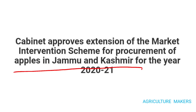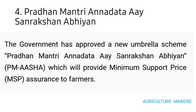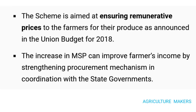Now we move into the PM ASHA scheme — Pradhan Mantri Annadata Aay Sanrakshan Abhiyan. The government has approved this new umbrella scheme which will provide minimum support price assurance to the farmers. The scheme is aimed at ensuring remunerative prices to the farmers for their produce, as announced in the union budget for 2018. The main aim is the assurance of MSP to the farmers by strengthening the procurement mechanism in coordination with the state government.